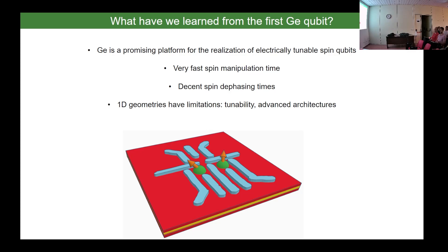The self-assembled dots grow by Stranski-Krastanov — strain-driven growth. You start with silicon, grow slowly with two to three monolayers of strained germanium, and then the system relaxes strain forming crystalline structures. You can't position them; you take SEM pictures, localize them, and do e-beam lithography. We don't transfer these nanowires — that's the difference from indium arsenide nanowires.